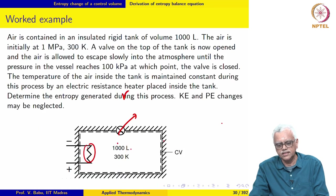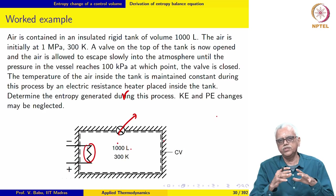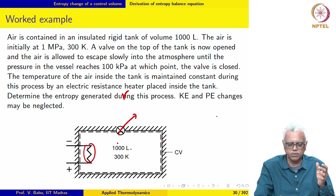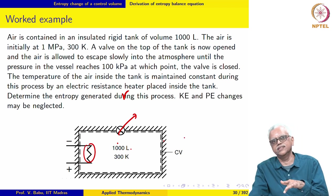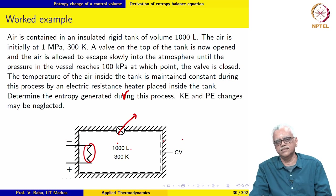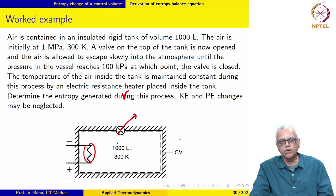Notice that in this case there is no external irreversibility because the vessel is insulated. The entropy generation is entirely due to internal irreversibility, which comes from ohmic heating within the control volume — electrical work crosses the boundary and ohmic heating occurs internally.